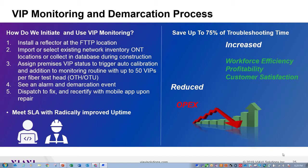The process for VIP monitoring: Step 1 — have a reflector at the premise location. Step 2 — import or select existing network inventory and premise locations associated with ONTs, identified by port. Step 3 — assign premises as VIP status to trigger auto calibration by the fiber test head and add them to a monitoring routine.